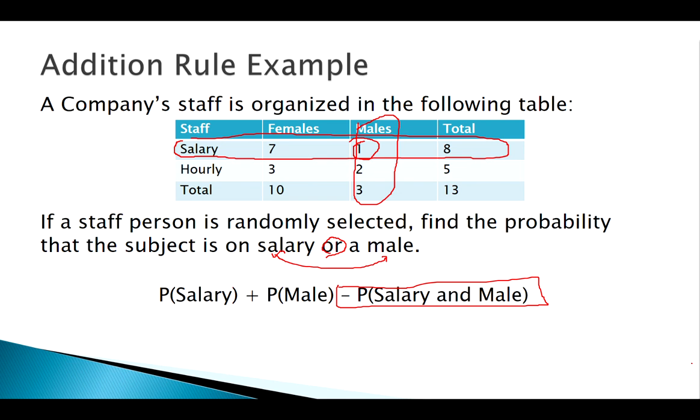We can see how if I count all salary people and all male people, I've counted that one male on salary twice. So I need to subtract that one, giving us 10 out of 13. Contingency tables are a good way to visualize this double counting idea.